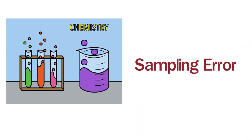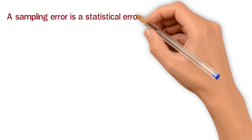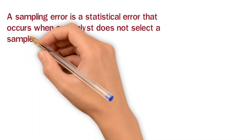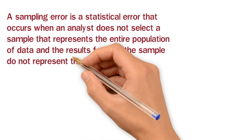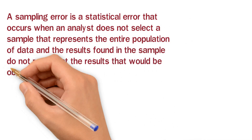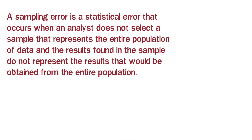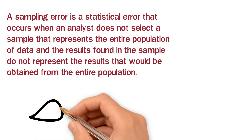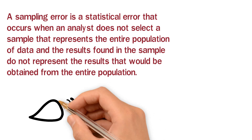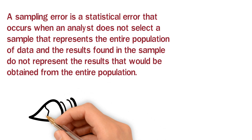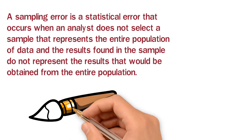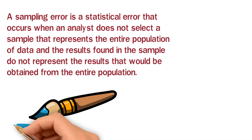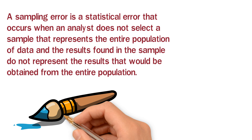A sampling error is a statistical error that occurs when an analyst does not select a sample that represents the entire population of data, and the results found in the sample do not represent the results that would be obtained from the entire population. When our sampling is not proper, then we have a sampling error.